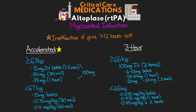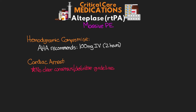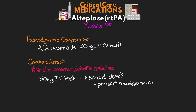The third use is for acute massive pulmonary embolism. For patients experiencing hemodynamic compromise, the American Heart Association recommends 100 mg IV infused over about two hours. For patients in cardiac arrest as a result of PE, there is no clear consensus, but the most common approach in recent literature is 50 mg IV push during the arrest, with a potential second dose if the patient remains hemodynamically unstable, has a recurrent arrest, or we've failed to achieve ROSC.